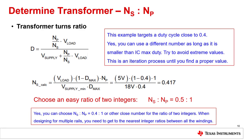We start to determine the transformer by choosing the turns ratio based on the duty cycle target. In this design we select the duty cycle to be maximum 40%. Different maximum duty cycles can be used — just make sure to stay below the maximum duty cycle of the IC and try to avoid extremes. As the maximum duty cycle happens at minimum input voltage, we can now calculate the turns ratio. In this case we get 0.417. As we want to use an easy ratio based on two integers, we select 0.5 to 1 as the ratio. Other ratios like 0.4 to 1 are also possible but might not be a good choice.